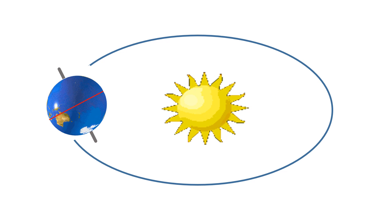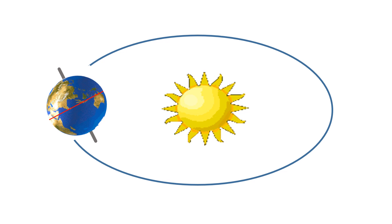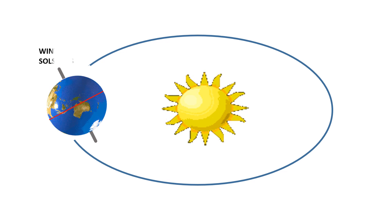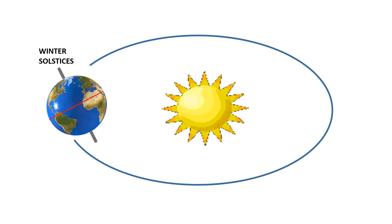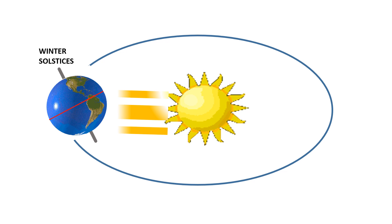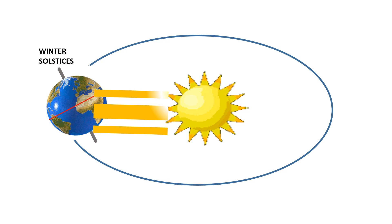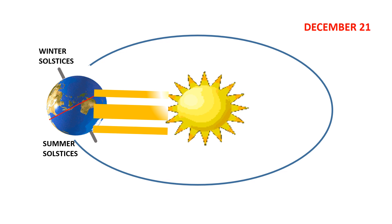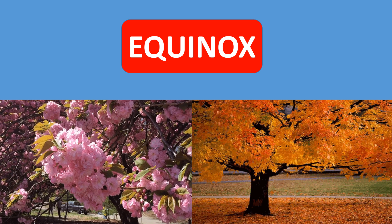When the northern hemisphere is most tilted away from the sun, it receives the least sunlight and experiences its winter solstice, while the southern hemisphere receives the most sunlight and has its summer solstice. This occurs around December 21st.